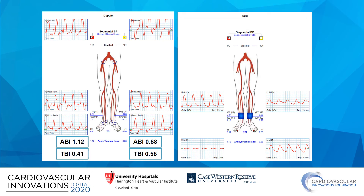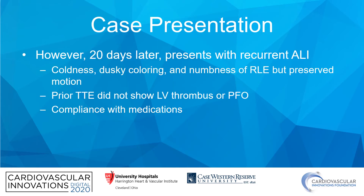This is the ABI and TBI on post-procedure day one. As you can see here, we have excellent flow into the right leg. However, about 20 days later, he presented with recurrent acute limb ischemia of the right leg. Suddenly, he had developed coldness, dusky coloring, and numbness of the right lower extremity, but did have preserved motion.